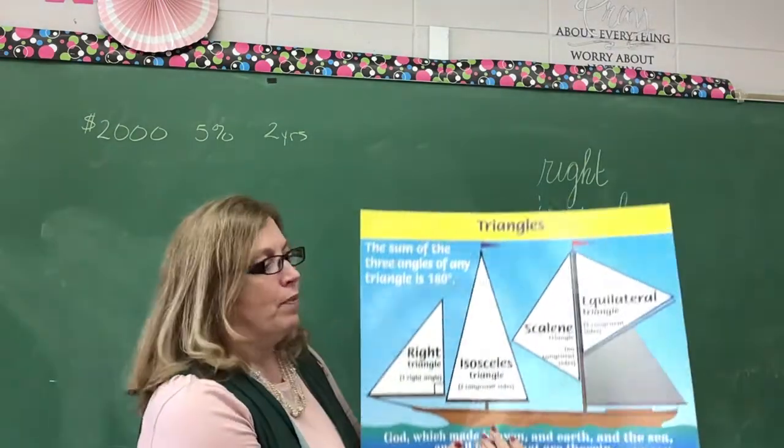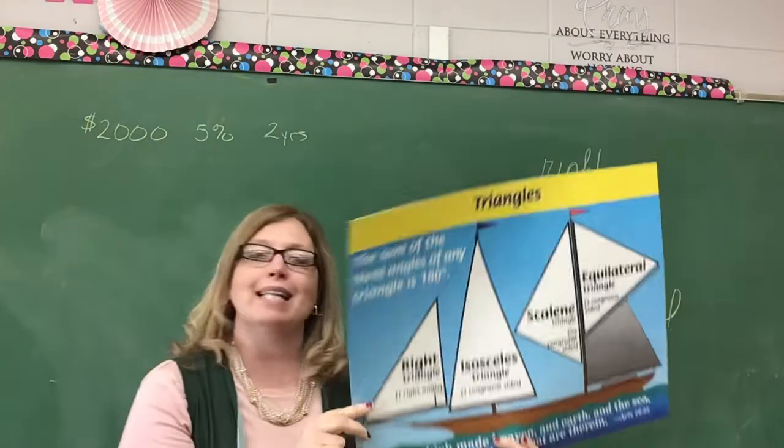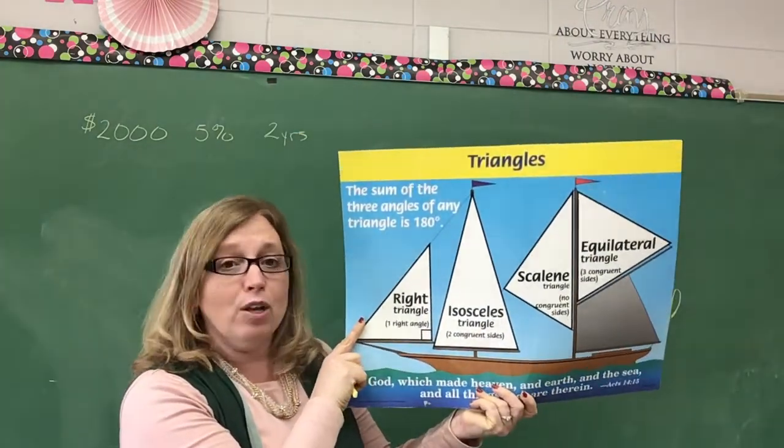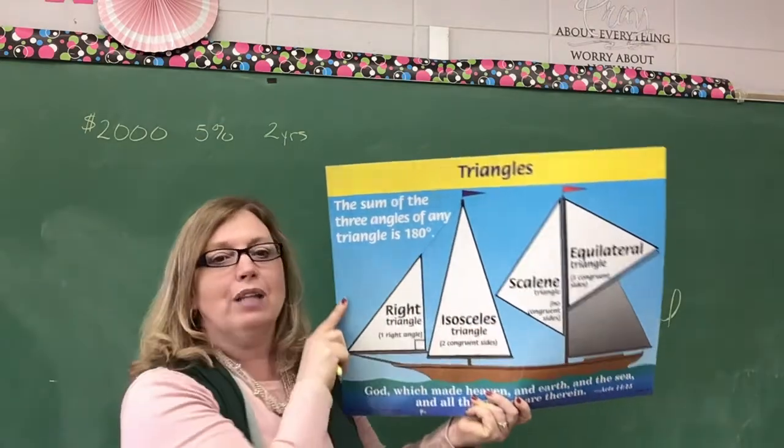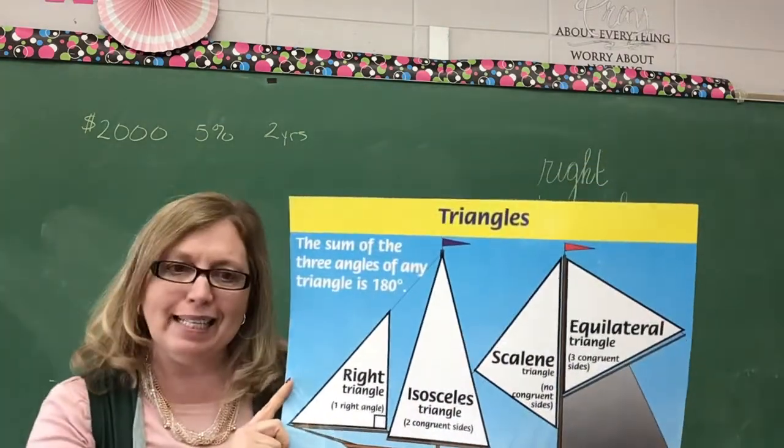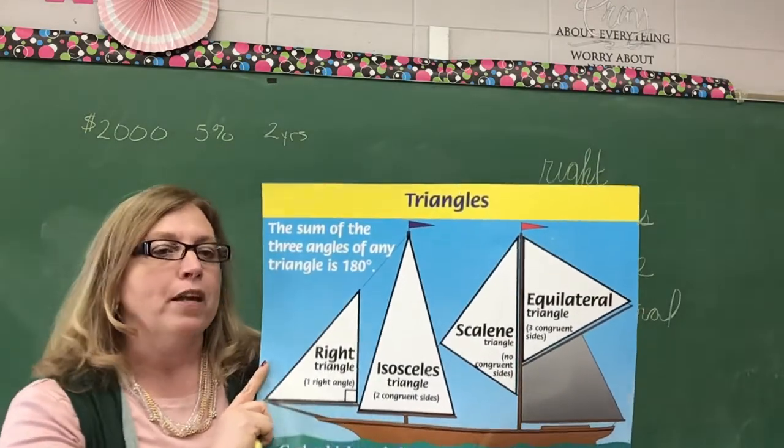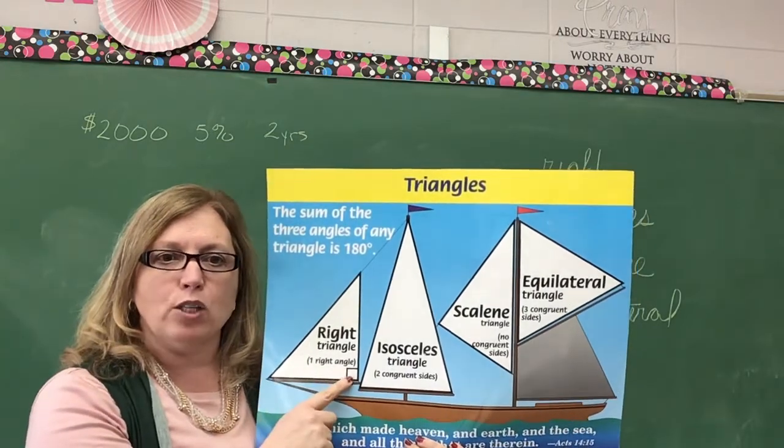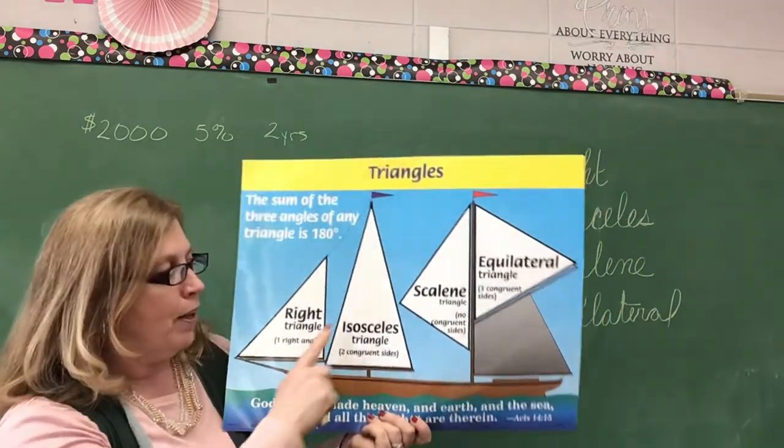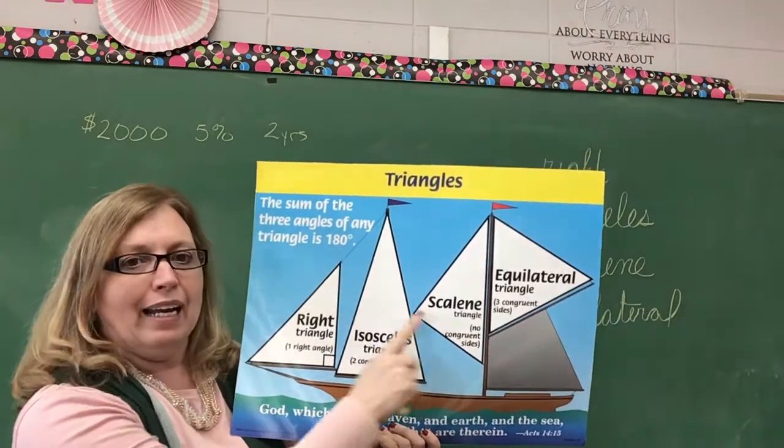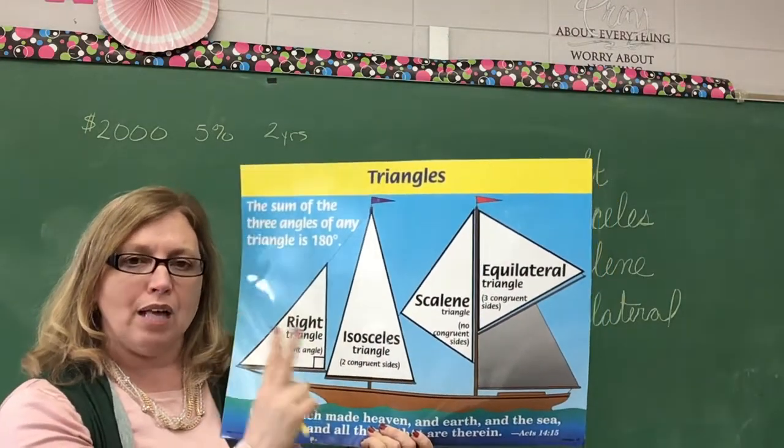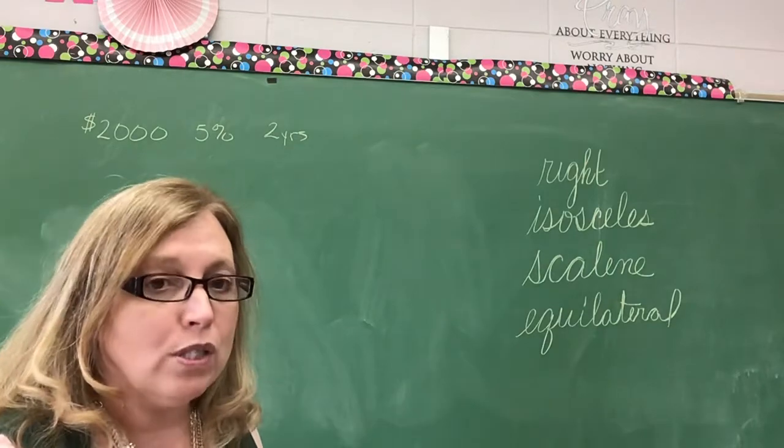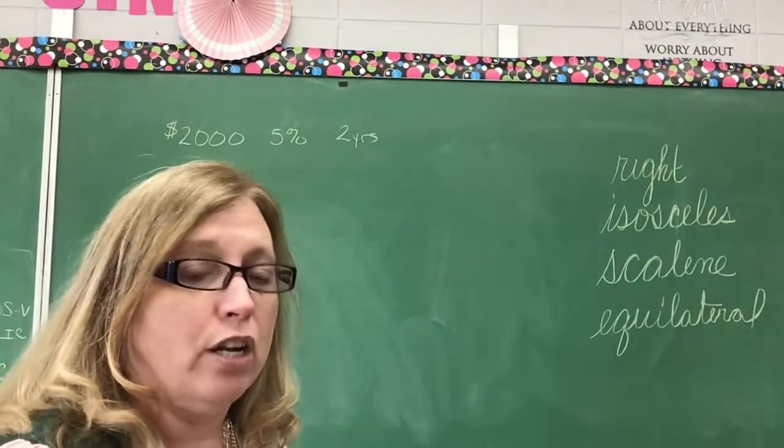Then, we have our scalene triangle. A scalene triangle has no congruent sides. When I look at this triangle, each side has a different length. It means none of the angles are going to be the same. The last one is an equilateral triangle. That should be very easy because of the word equal. It means all the sides are equal. So, you have equilateral, all the sides are equal. A right triangle, it has a right angle. The only two you really have to think about are isosceles and scalene. Isosceles has two sides that are congruent, and a scalene has no sides that are congruent. You will need to know those triangles by definition for your test.